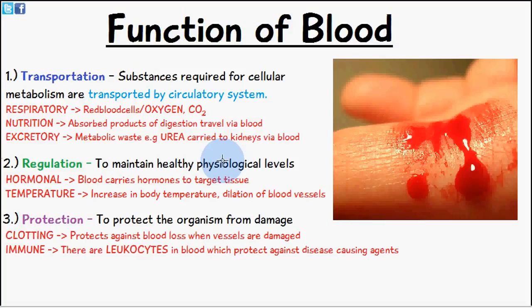The third function of blood is protection — to protect the organism from damage. In the case of clotting, it is a mechanism which protects blood loss when vessels are damaged. In the case of the immune system, there are leukocytes in the blood which protect against disease-causing agents such as bacteria, antigens, and viruses.